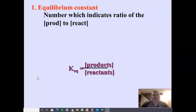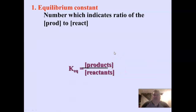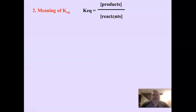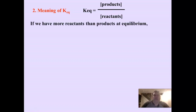You won't be responsible for calculating a KEQ — somebody else will do that. Your job is to figure out, after they calculate it and present you with the number, what does the number mean? Since it's products over reactants, if we have more reactants than products at equilibrium — mostly reactants with just a little bit of products — then the numerator is a small number and the denominator is a big number.